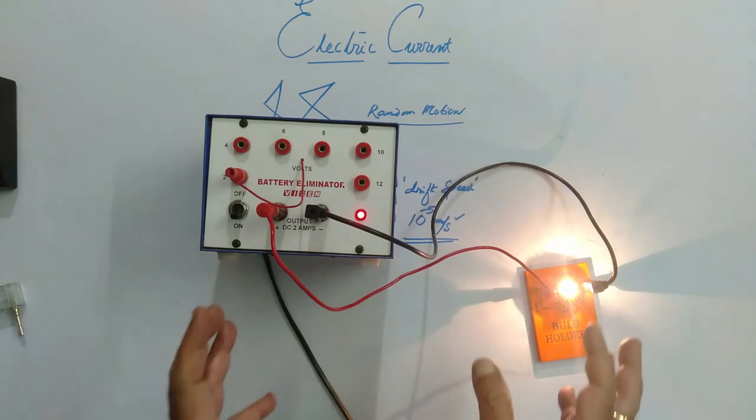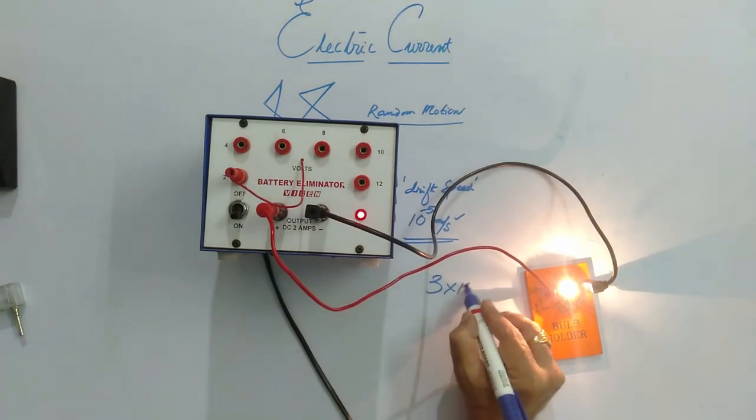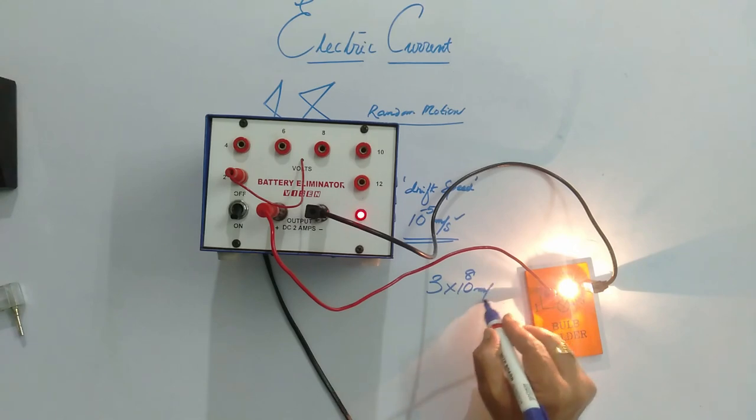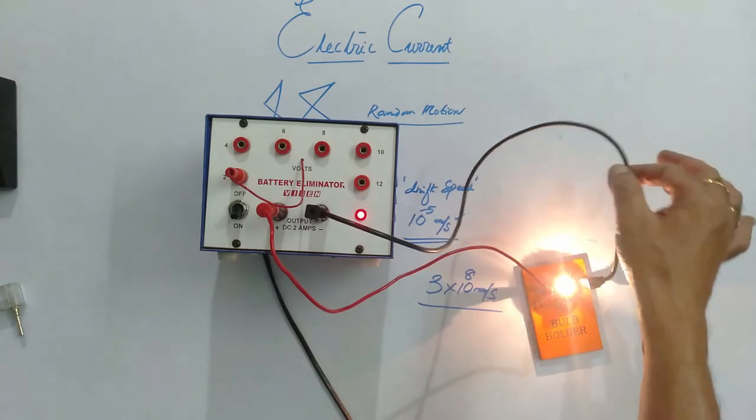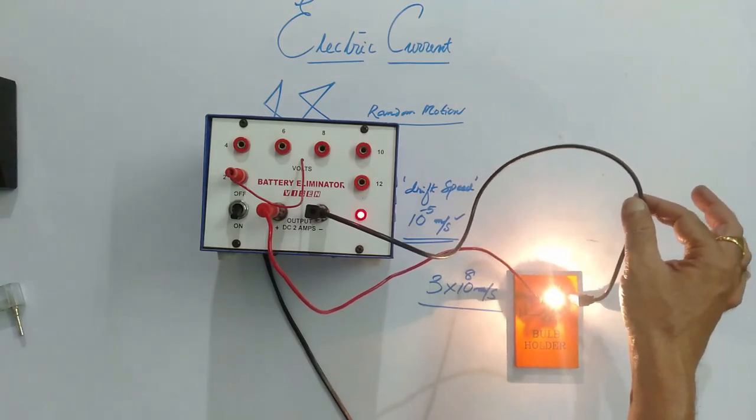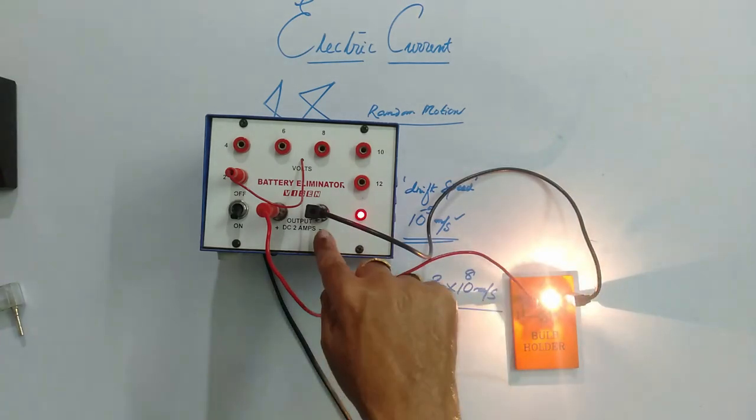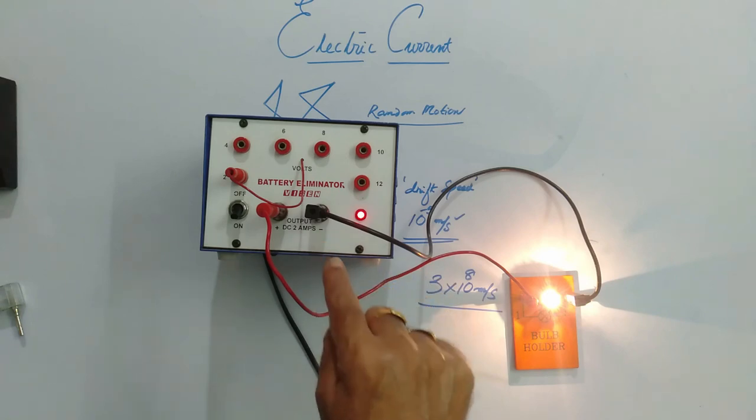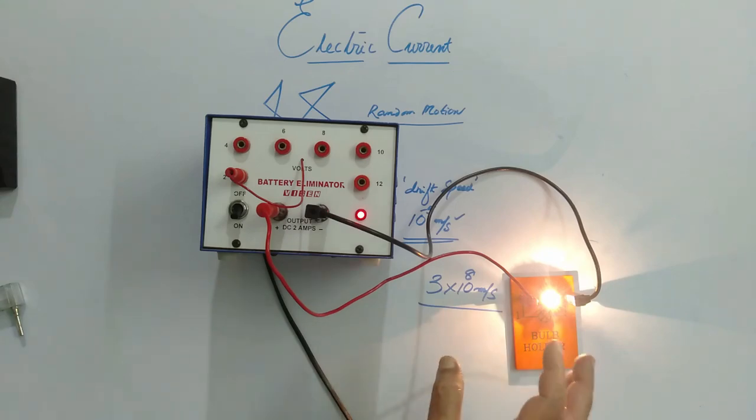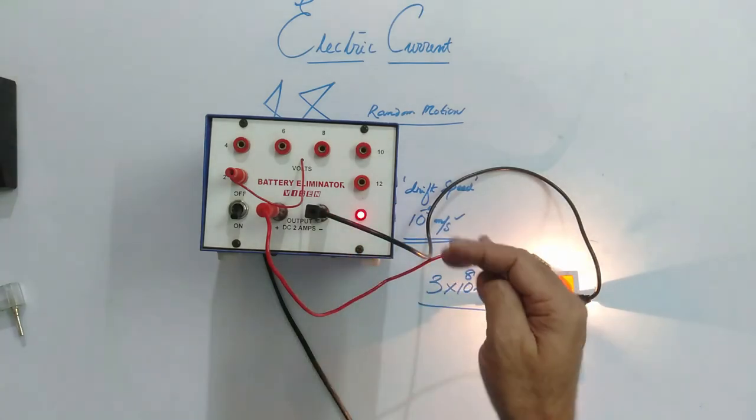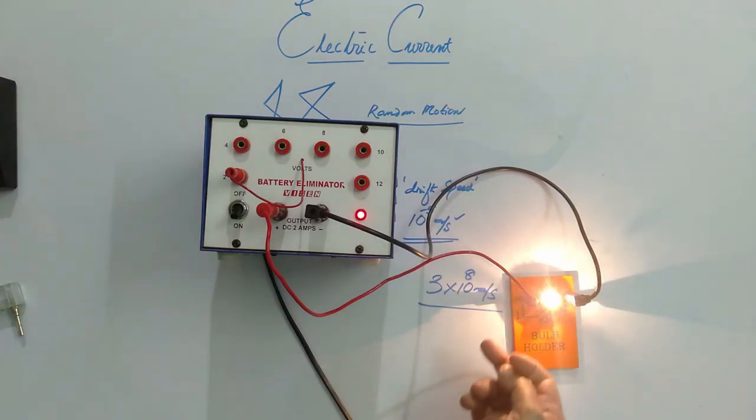And electric field moves with the speed of light, 3 into 10 to the power of 8 meter per second. And this entire wire consists of electrons; it is not only that electron which is at the negative of the battery. So these electrons are there, when the electric field is generated, immediately the electrons, one being pushed by the other, and immediately it passes through the bulb.